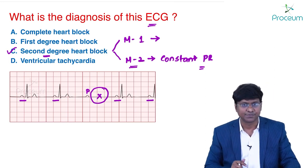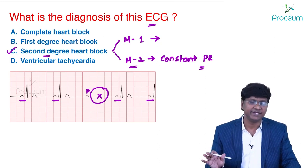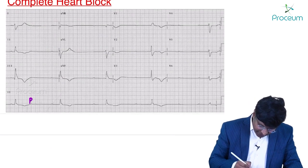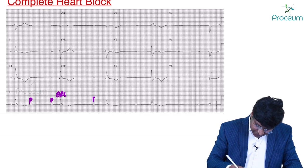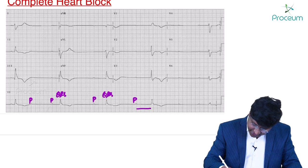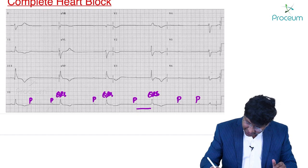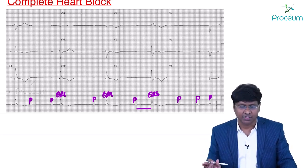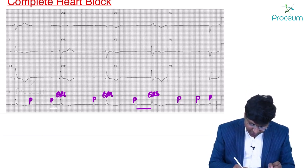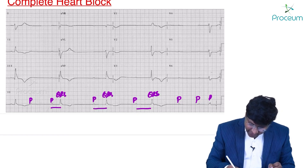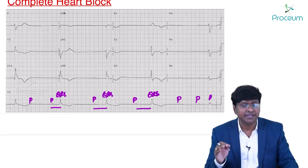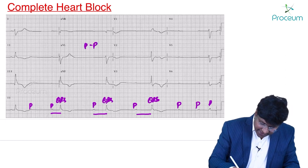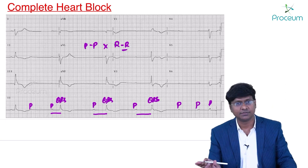In this ECG, the PR interval is constant but there is intermittent drop in the QRS complex, suggesting Mobitz type 2 second-degree AV block. In complete heart block, there is complete AV dissociation — the atria and ventricles contract independently, PP and RR intervals don't match. In first-degree heart block, the PR interval is prolonged beyond 200 milliseconds, with no dropped beats.